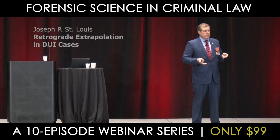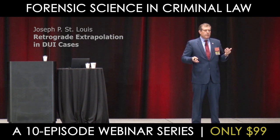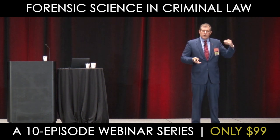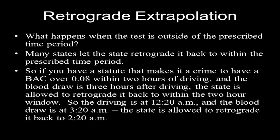In a lot of states, there is a presumption that if you have an alcohol concentration within a certain period of time, that's what they were at the time of driving — but it's a rebuttable presumption. You can bring in evidence to show they could have been lower at the time of driving, and that is a defense. In the 19 states with this time limit, many states will let the prosecution retrograde it back into the window. If the statute makes it a crime to have a BAC of .08 or above within two hours, and the test is three hours out, the state is allowed to retrograde the number back to within two hours of driving.